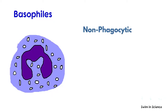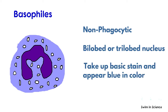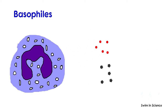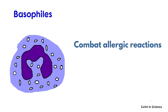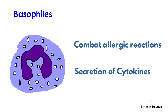Basophils are non-phagocytic in nature. They have a bi-lobed or trilobed nucleus. They take up the basic stain methylene blue and appear blue in color. Their lifespan is a few hours to a few days. Basophils release pharmacologically active substances from their cytoplasmic granules such as histamine, which escorts allergens out of the body, and heparin, which prevents clotting. They primarily combat allergic reactions and also help in the secretion of cytokines involved in the maturation of T helper cells.